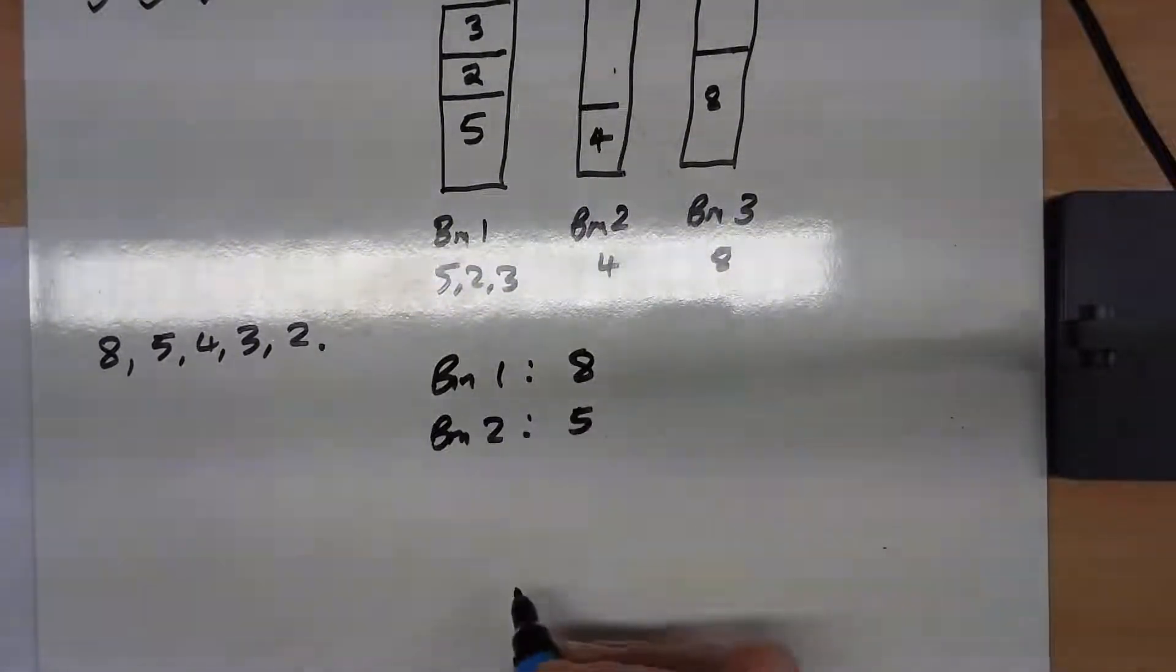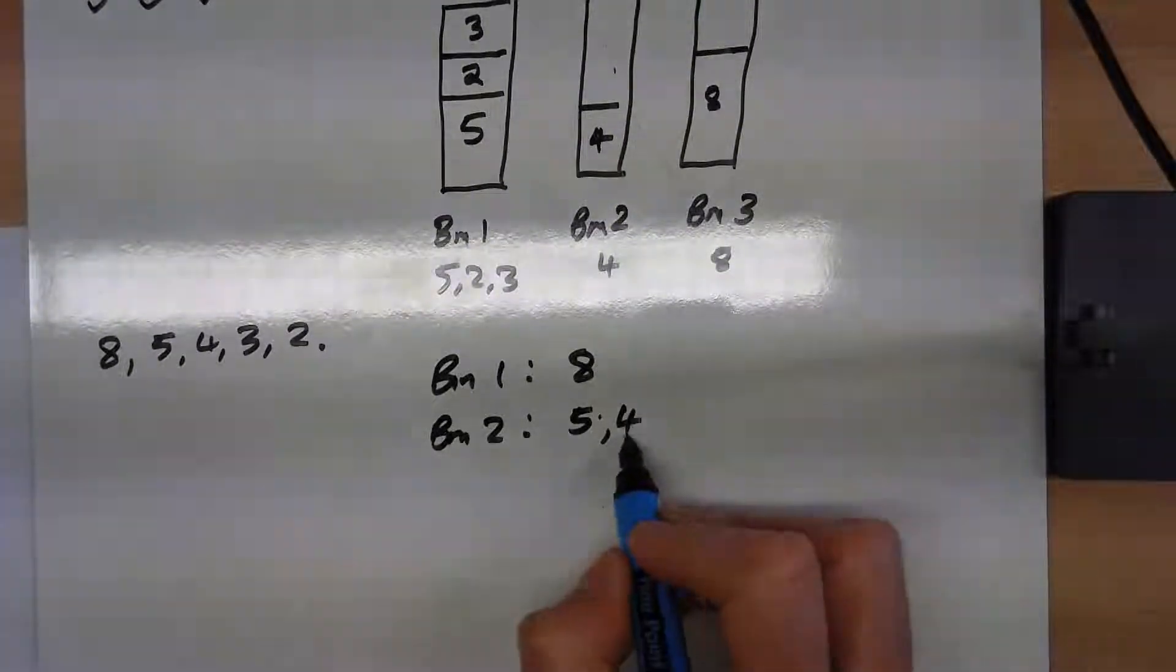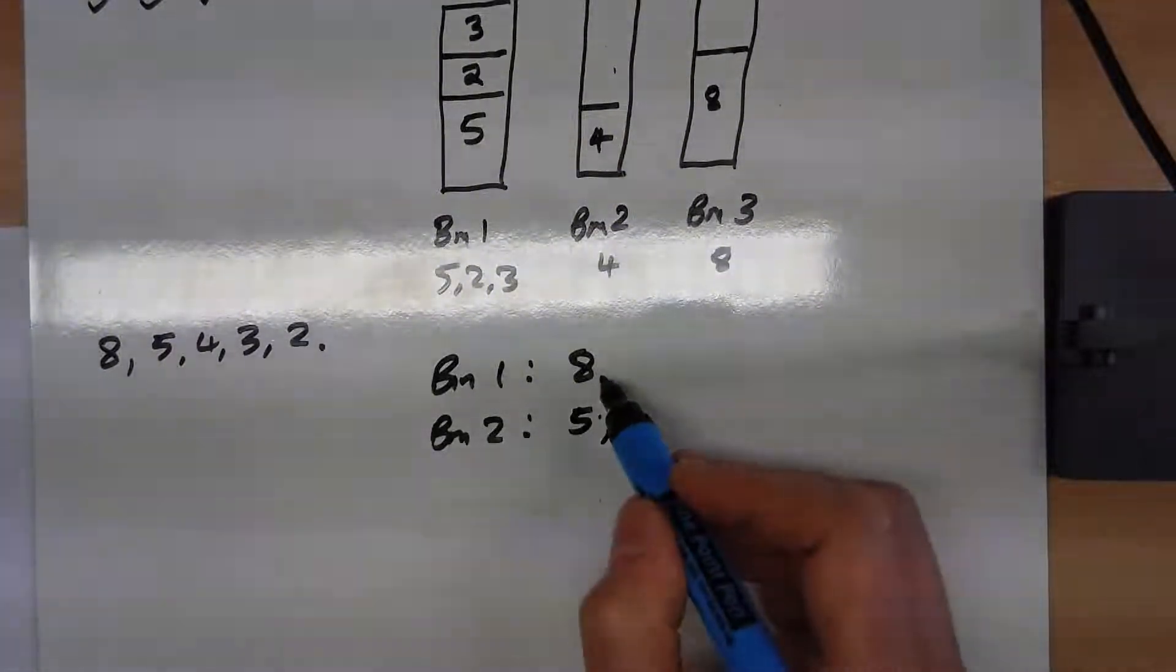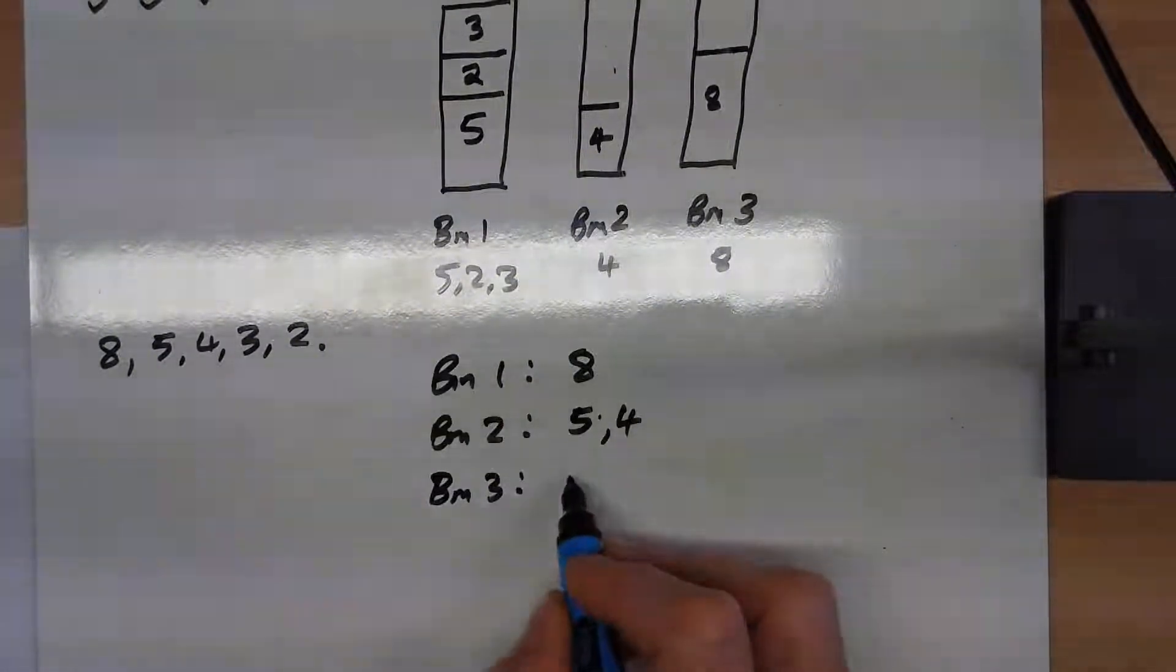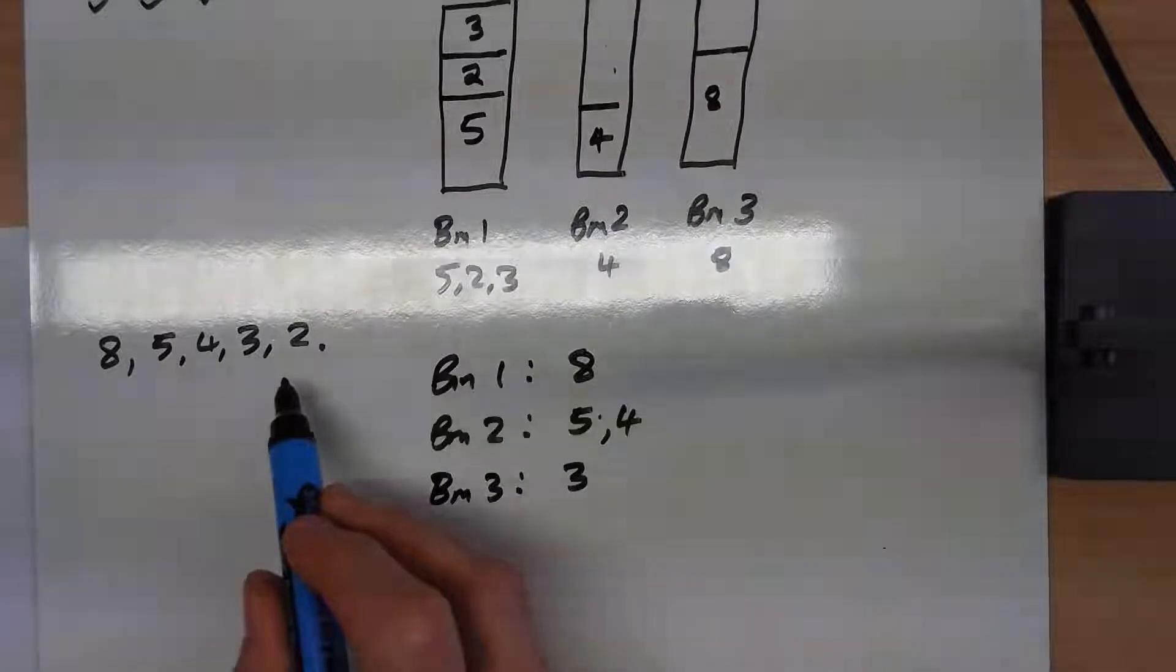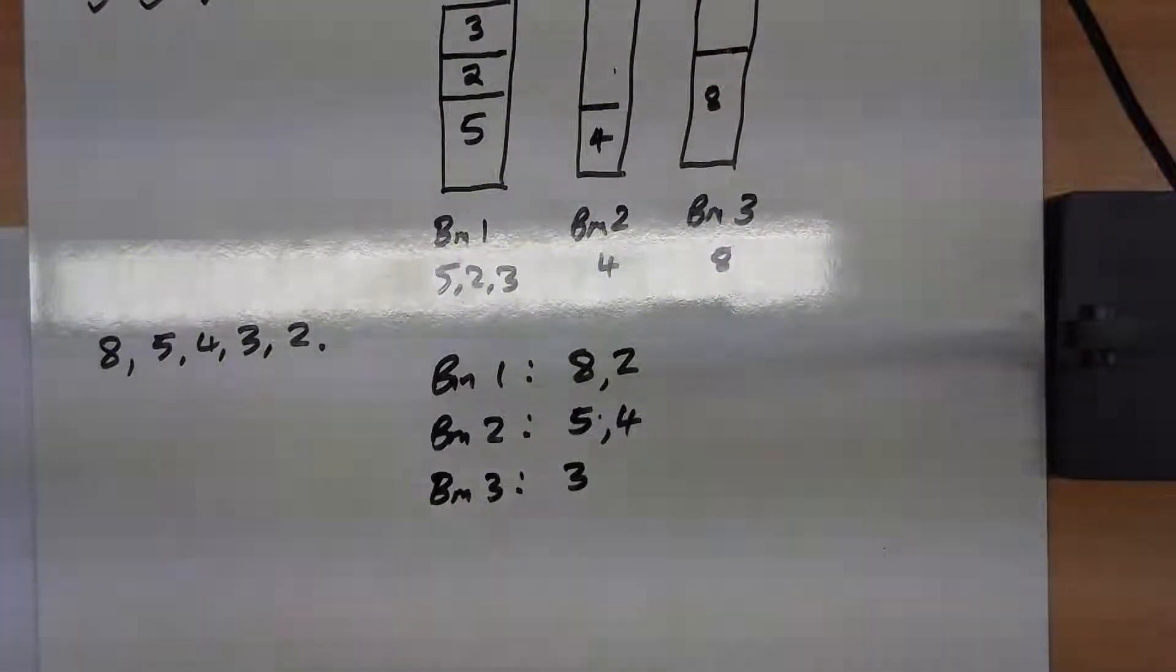So we'll put the 5 in bin 2. The 4 won't go in bin 1 but will go in bin 2. The 3 won't go in either bin, so it needs its own bin. And the 2 would actually fit in that first bin.